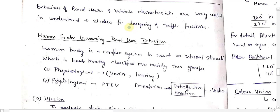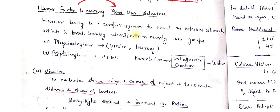After the completion of the jobs of a traffic engineer, we move to road users. Behavior of road users and vehicle characteristics are very useful to understand and study for design of traffic facilities. Human factors govern road user behavior, and on the basis of those parameters we design our traffic facilities. The human body is a complex system to external stimuli, broadly classified into two groups: psychological and physiological.